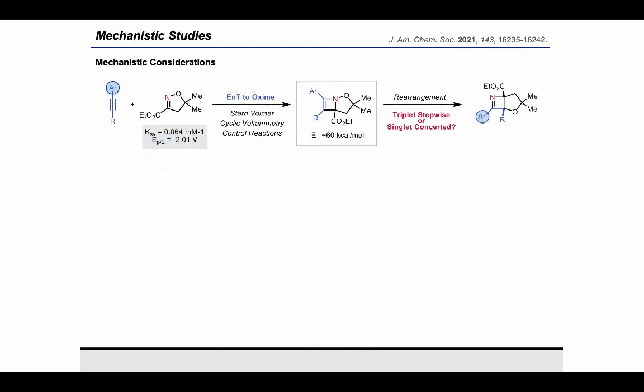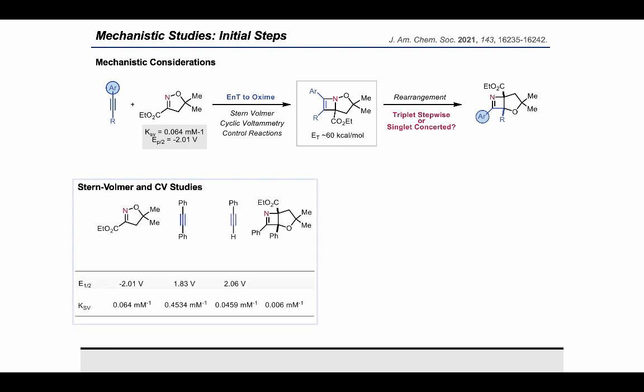Lastly, we were really interested in exploring the mechanism of this rearrangement to form the 1-azetine products, as this had been unexpected, and understanding new mechanisms arising from triplet energy transfer is important for this rapidly growing field. The first thing we wanted to explore was the first 2+2 cycloaddition step, and to do this we performed Stern-Volmer quenching studies. The result of this study showed that the alkyne substrates were capable of quenching the catalyst as well as the oxime substrate. And since we were able to rule out electron transfer through cyclic voltammetry, this indicates that either the triplet state alkyne or triplet state oxime could be participating as the excited state component to initiate the 2+2 cycloaddition.